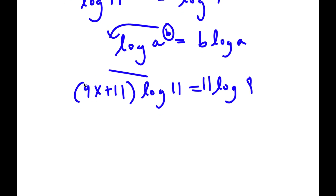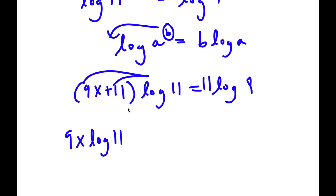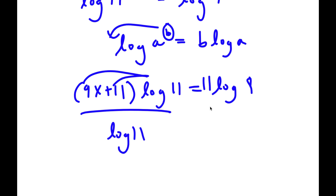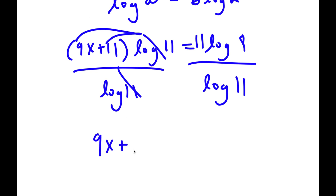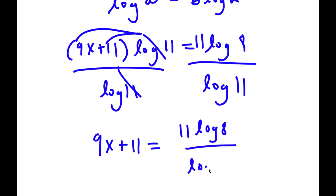Now I'm not going to distribute log 11. Instead I'm going to divide both sides by log 11. These two cancel out and I have 9x plus 11 is equal to 11 times log 9 over log 11.